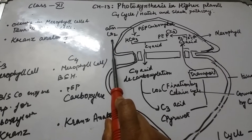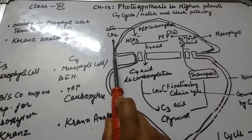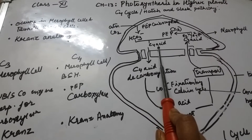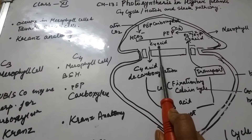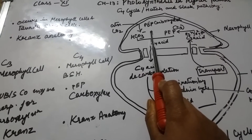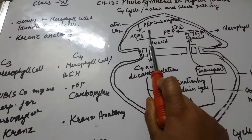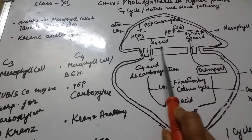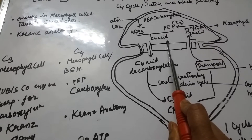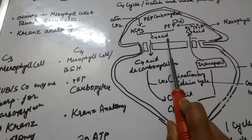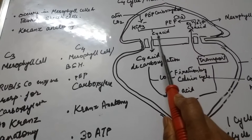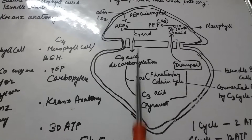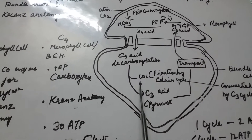In this cycle, atmospheric carbon dioxide is used and carboxylation occurs, resulting in the formation of a C4 acid by the enzyme PEP (phosphoenolpyruvate) carboxylase. The C4 compound formed — oxaloacetic acid, malic acid, or aspartic acid — is then transported from the mesophyll cells to the bundle sheath cells.